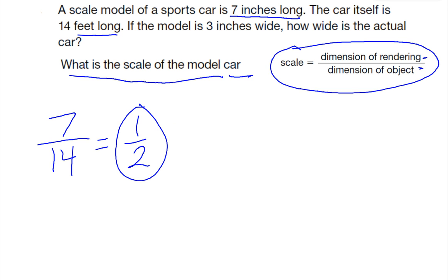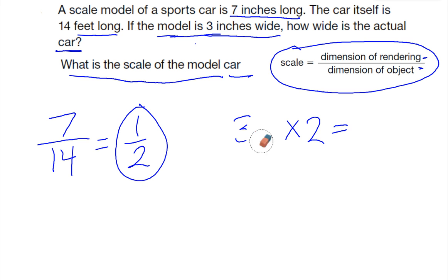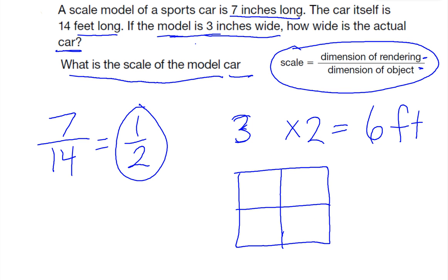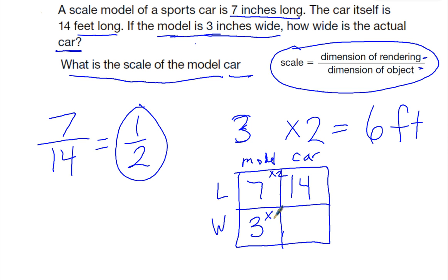Now to figure out how wide this car is, I know that it's 3 inches wide for the model. Since I'm going from the model, which is small, to the car, which is big, I'm going to take 3 inches and times it by 2. 3 times 2 is 6, so the width of the car will be 6 feet. I can also show this in a diagram with the model and the actual car — length and width. The model length is 7 inches, width is 3. On the real car it's 14. So 7 times 2 is 14, meaning I need to multiply 3 times 2, which equals 6. So that's the other way you can find the missing dimension.